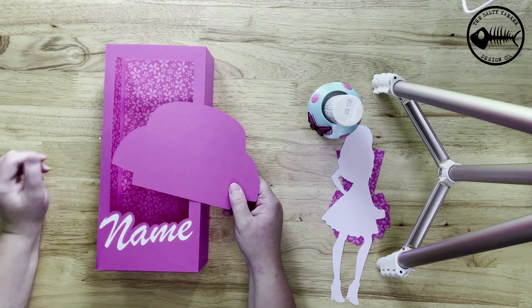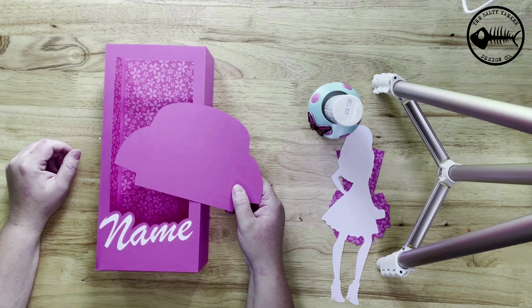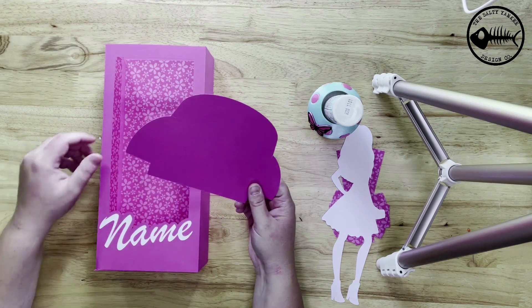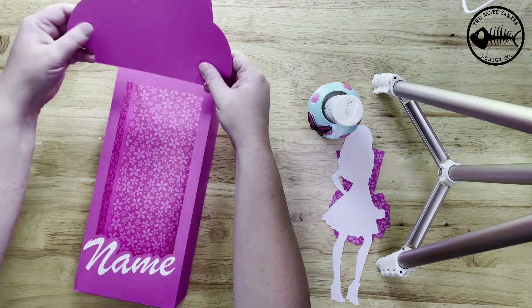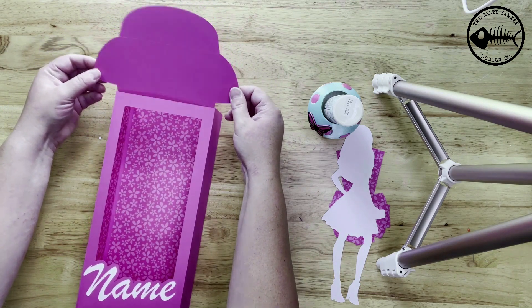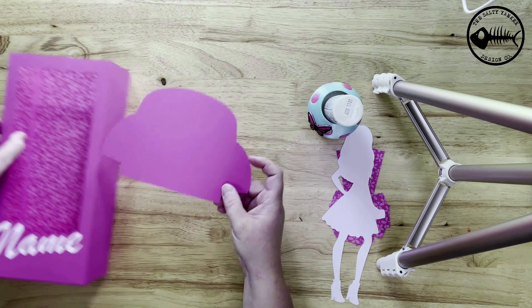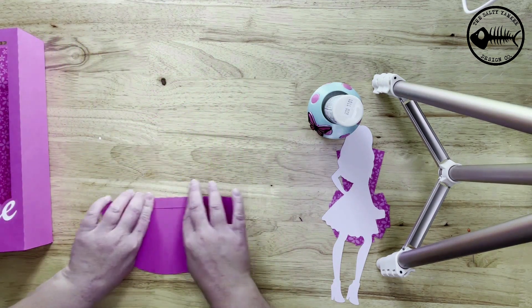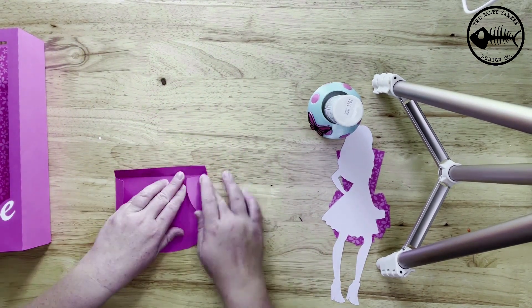So now we're going to add the top of the box. The top of the box is going to be glued to the front instead of the back. So it's going to go in just like that. The reason is because you're going to be able to open and close the top. So let's crease the top.